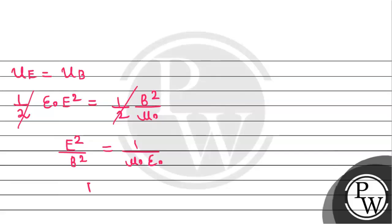Now taking root on both sides, the required ratio of electric field to that of magnetic field will be equal to one by under root mu naught epsilon naught.